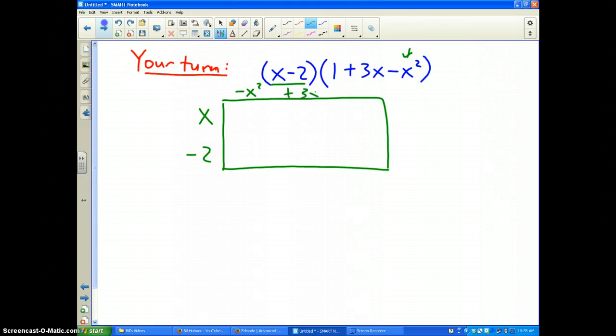+3x second, and +1 third. Okay? So a few times these together. This becomes -x³. This becomes +3x², and this becomes +x. And this becomes +2x². This becomes -6x, and this becomes -2. So there we go. Again, diagonally are your like terms.